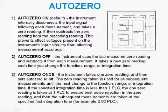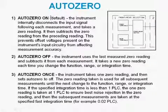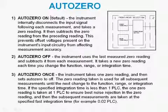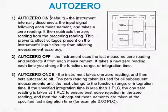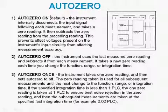So this is the AutoZero function. We have three choices. The first is AutoZero On, and this is the default — the most accurate. This will make a zero reading for every input reading that is made. So you're basically making two readings: the input that you're asking for, and then an internal zero measurement that is subtracted.